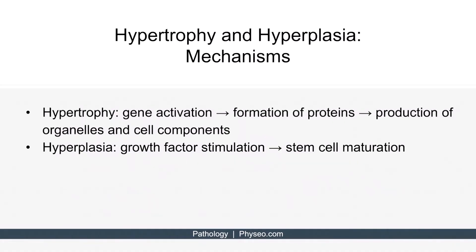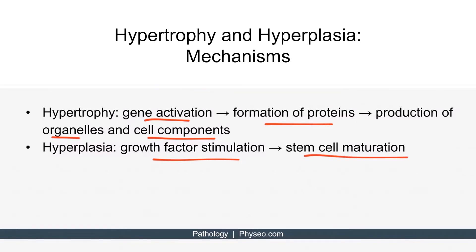As far as mechanisms are involved, hypertrophy involves increased production of cellular proteins, which occurs via gene activation. This leads to protein formation via transcription and translation, which then leads to increased production of organelles and other cellular components, ultimately increasing the size of the cell. Hyperplasia, on the other hand, is a result of growth factor stimulation of stem cells. The stem cells mature, and this yields an increase in the number of cells.